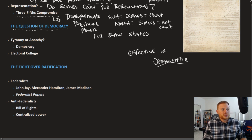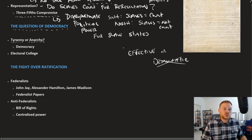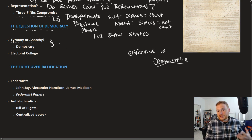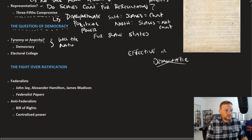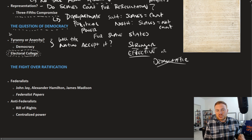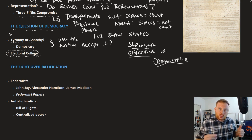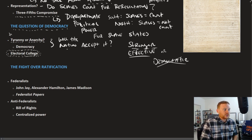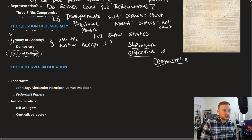This balancing act was always present — tyranny versus anarchy. You don't want something so democratic that it becomes anarchy, but you don't want something so strong that it becomes tyranny. One of the things that comes out of this is the electoral college — the process by which the president is chosen. It illustrates the struggle between creating a government strong enough to function, but not tyrannical, and democratic enough to reflect the will of the people, but not anarchy.